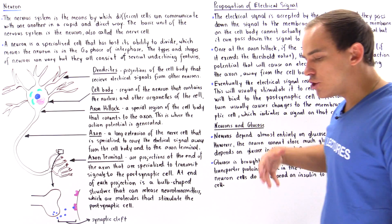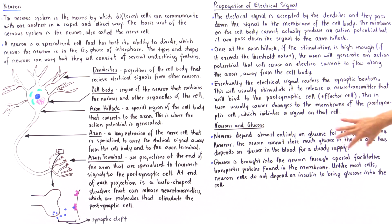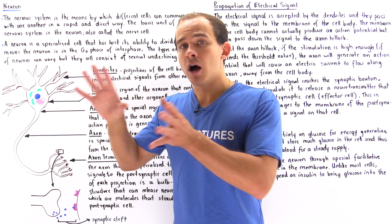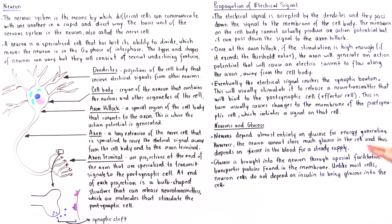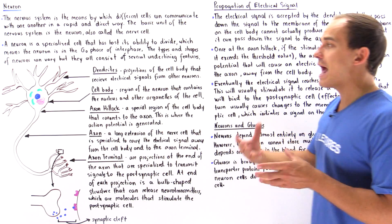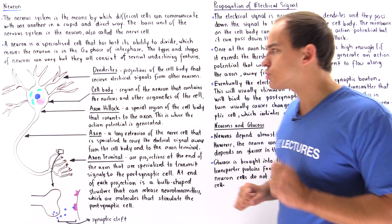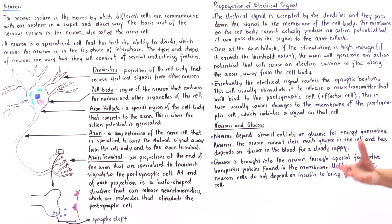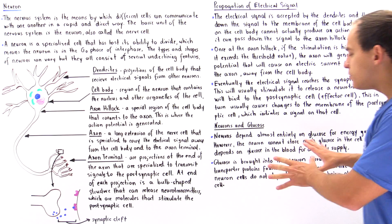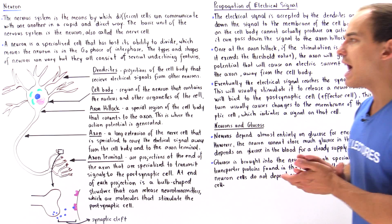Glucose is brought into the neuron via special protein molecules found in the membrane of our cell body known as facilitative transporter proteins. Unlike most other proteins that transport glucose found in other cells of the body, the proteins in the membrane of nerve cells do not usually depend on insulin to transport glucose inside the cell. This means glucose can still be brought into the cell in the absence of insulin, though insulin does still play an important role in glucose transportation.